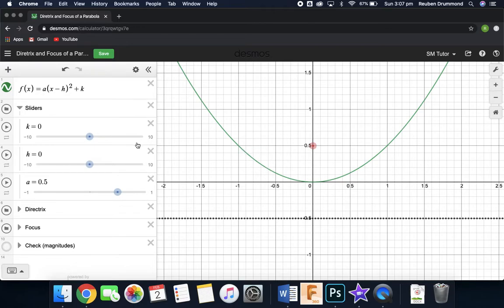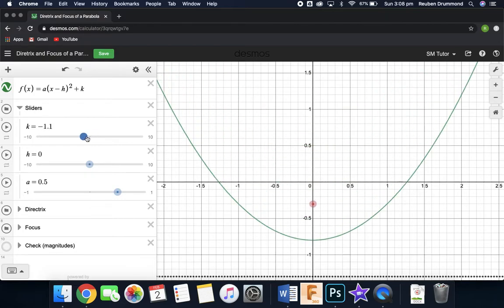So I've made this Desmos document so we can see what happens as we change these variables. As we increase K, it should translate vertically, which it does.